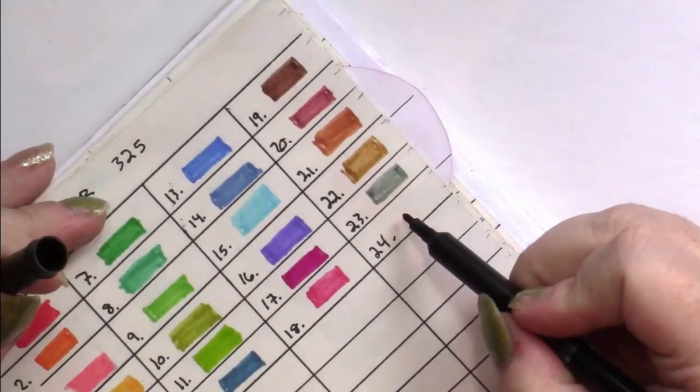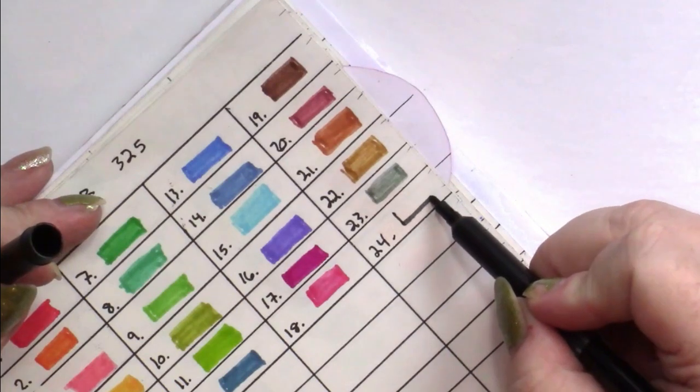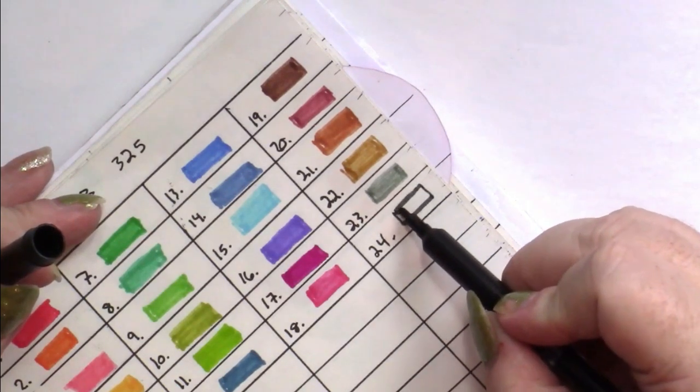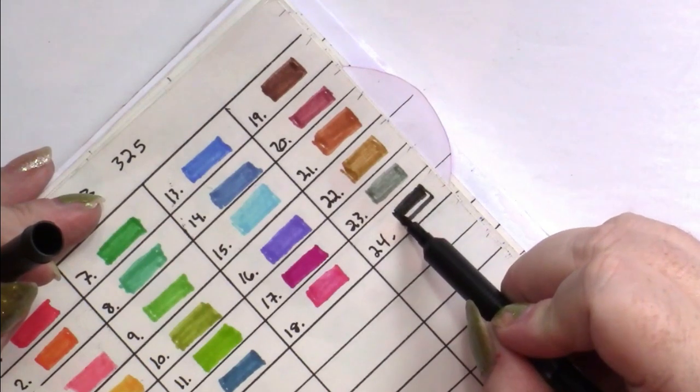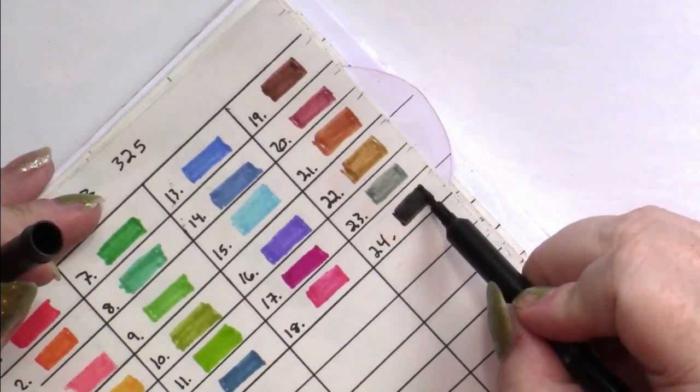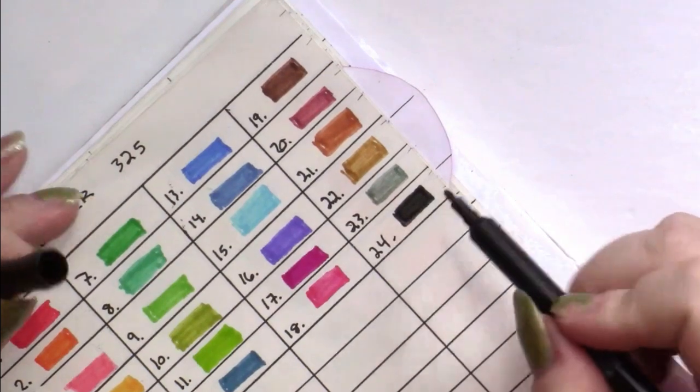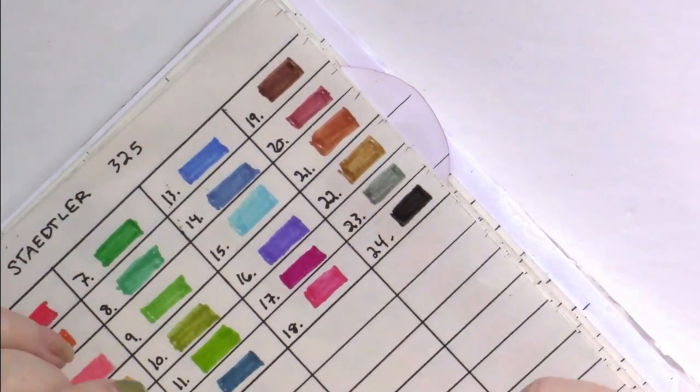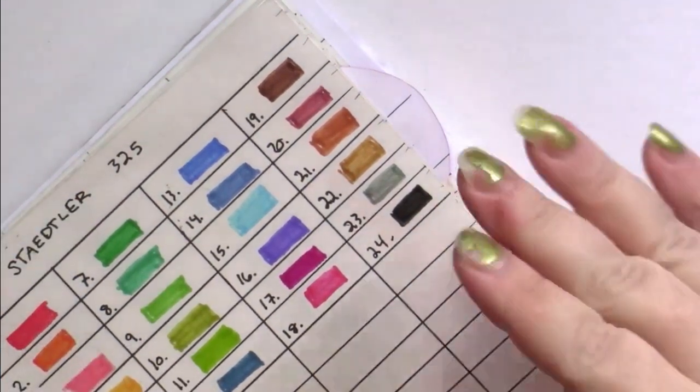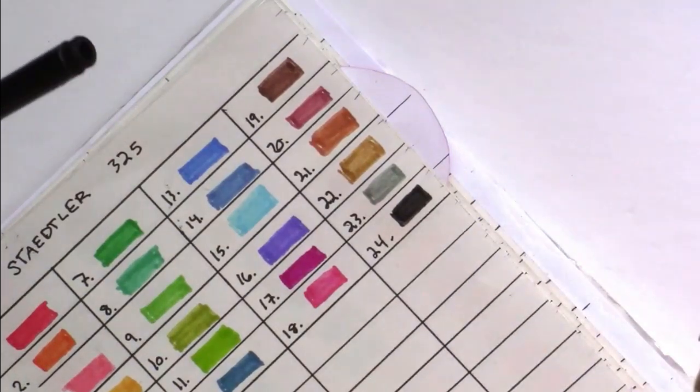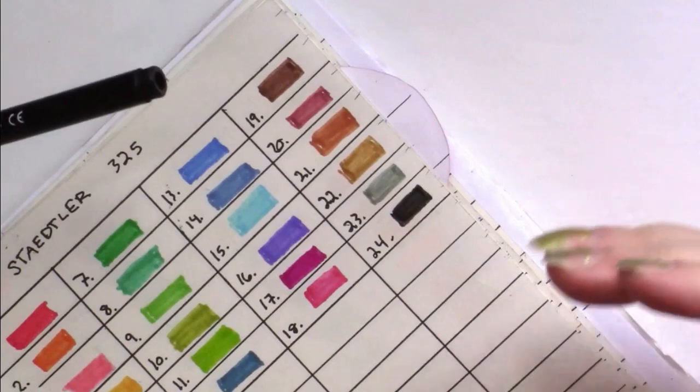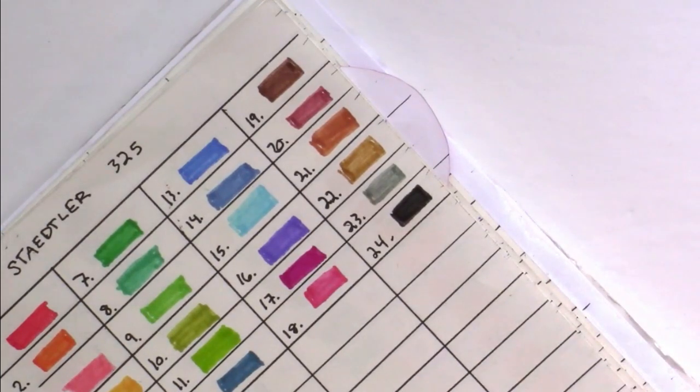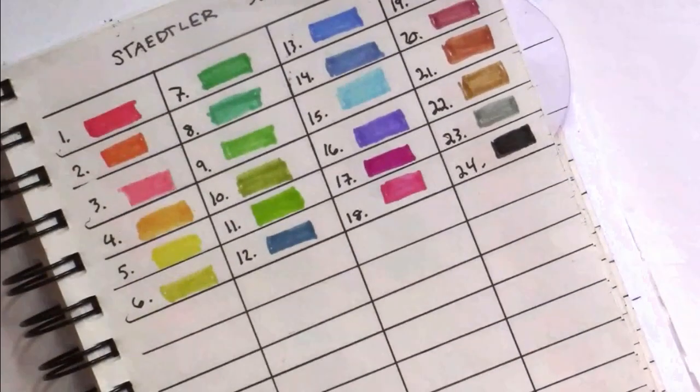And then we have black. And this is more like a dark gray than it is a black. They're all toned down in color. Like the black isn't even dark enough to be a true black. So, those are actually pretty colors.